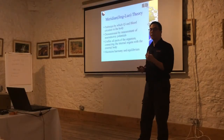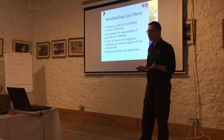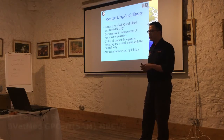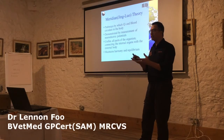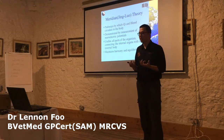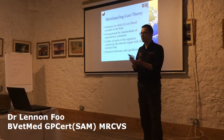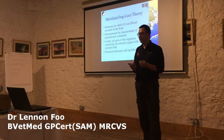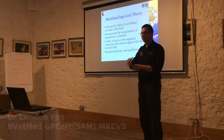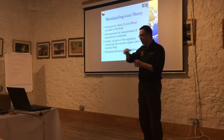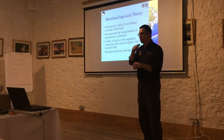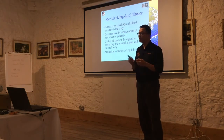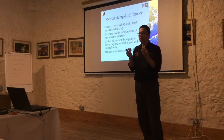A little bit about Meridian or the Jingluo theory: they talk about the pathways through which qi, energy, and the blood circulate in the body, and it is actually demonstrated. It's not just a random theory — they can actually find the meridian, which is a line across the whole body. It's demonstrated by the measurement of neuroelectric potentials.